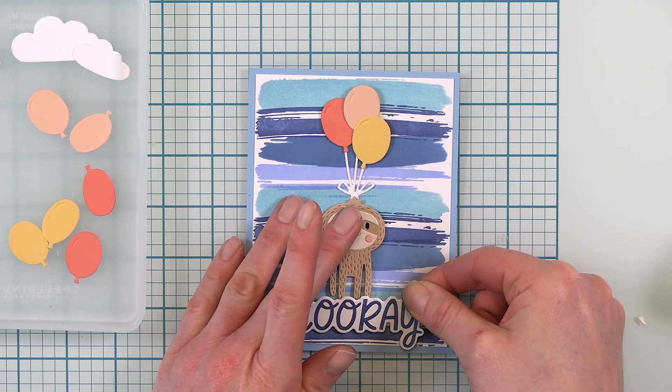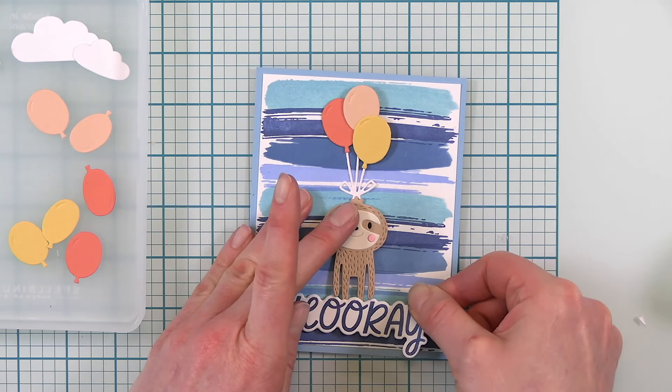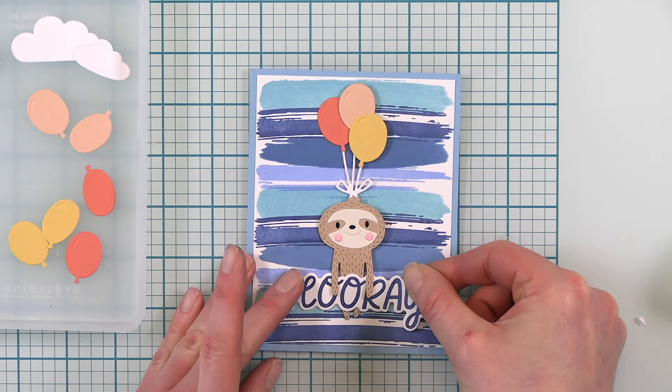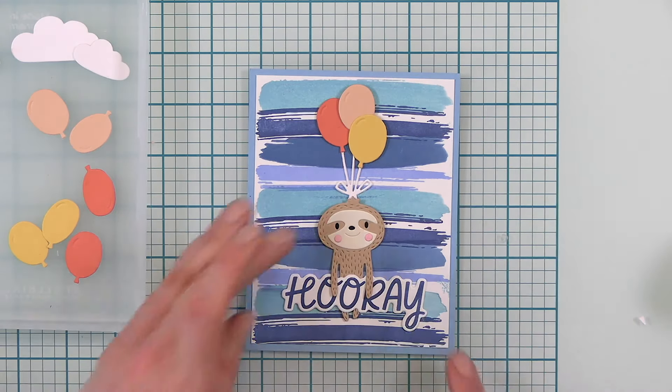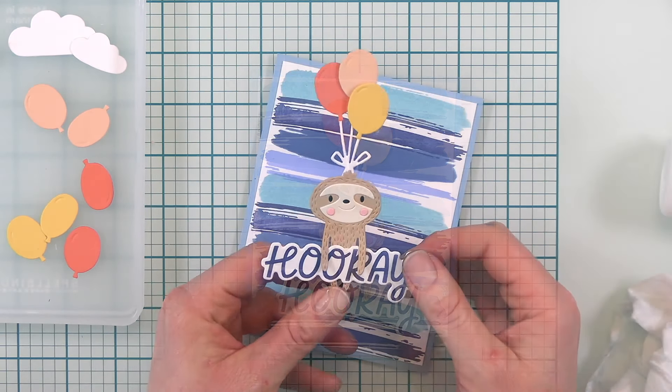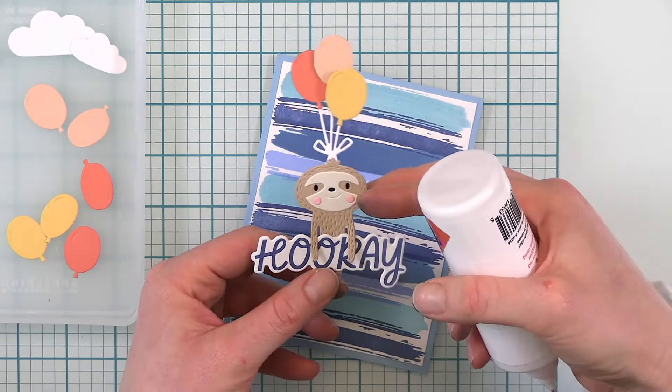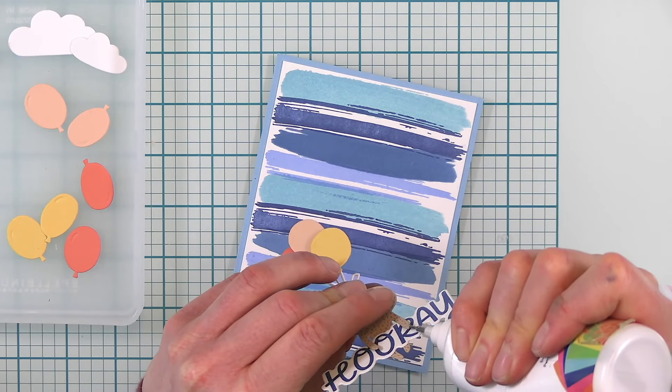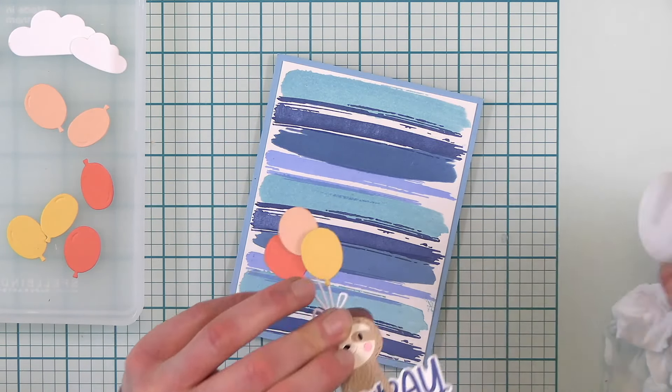Now the sentiment is sized perfectly just to slide underneath of his little arms. So it looks like he's holding on to the sentiment and floating up in the air and I just love that. So I glued that sentiment down to my little sloth.